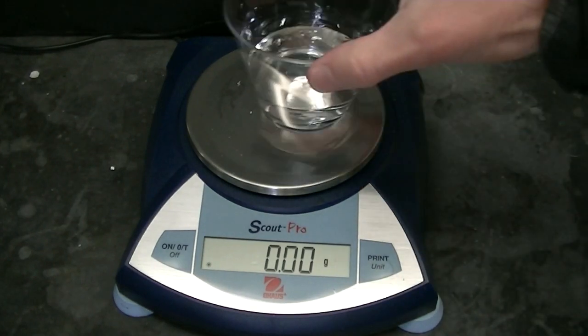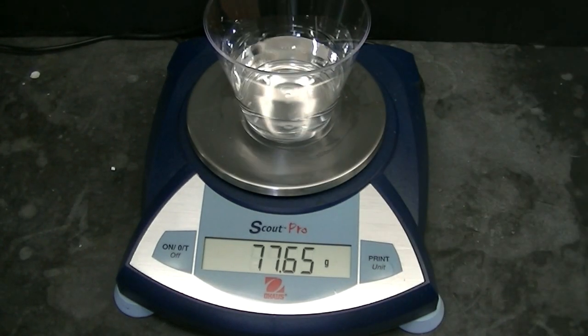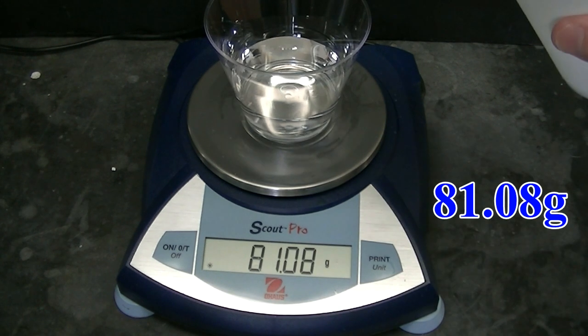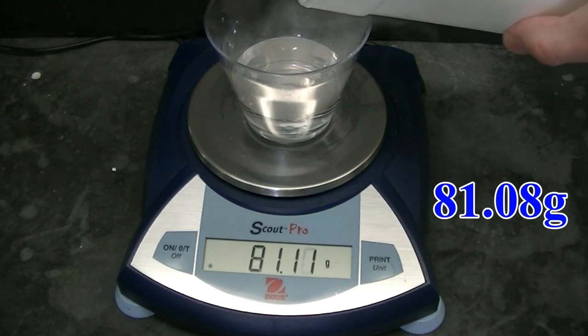We can do a simple experiment to show this is the case. First, I'll place some water on the balance, and we notice it has a mass of 81.08 grams. Now I'll add some liquid nitrogen, and we'll see what happens.